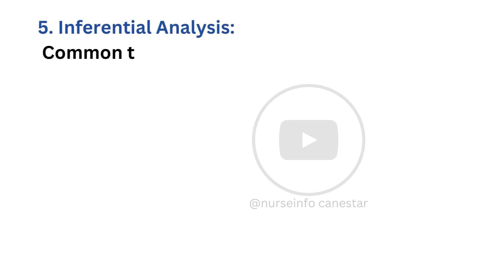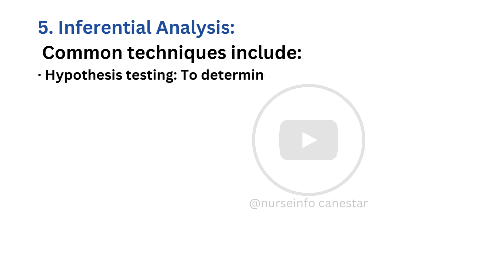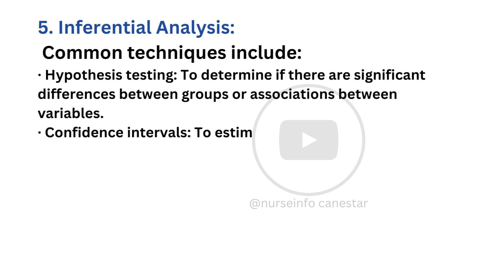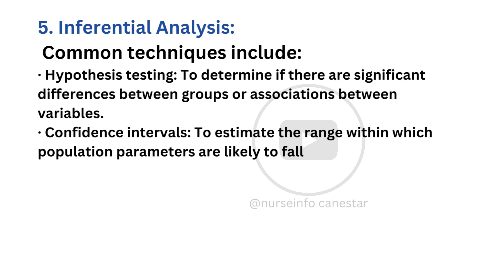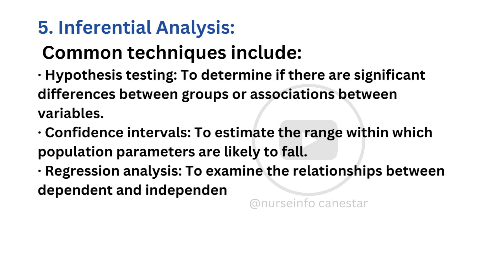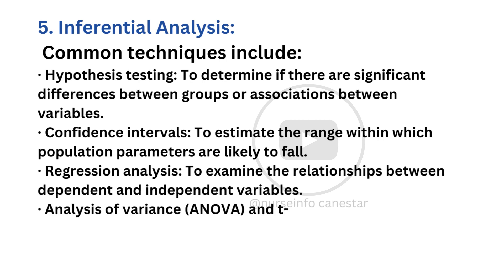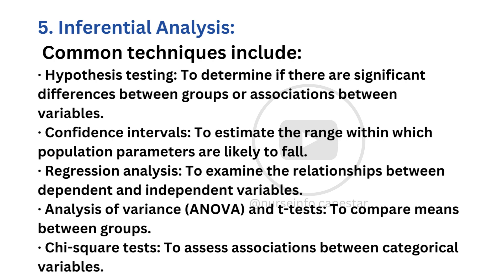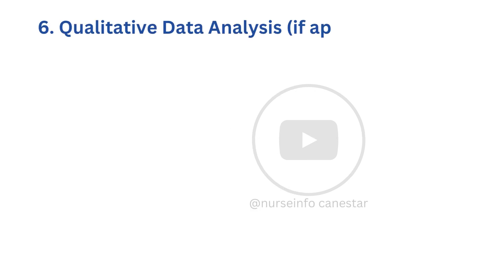Hypothesis testing: To determine if there are significant differences between groups or associations between variables. Confidence intervals: To estimate the range within which population parameters are likely to fall. Regression analysis: To examine the relationships between dependent and independent variables. Analysis of variance (ANOVA) and t-tests: To compare means between groups. Chi-square tests: To assess relationships in categorical data.